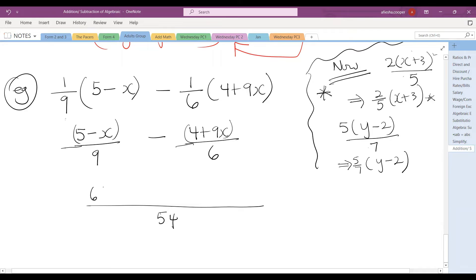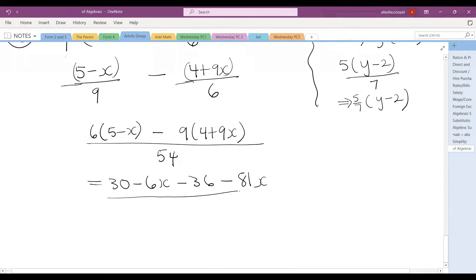9 into 54 is 6, so we do 6 by 5 minus x. Minus 6 into 54 is 9 by 4 plus 9x. We simplify, that will give us 30 minus 6x minus 36 minus 81x, all over 54. A lot of times, please don't forget to put back the numerator. Let's add up our like terms, 30 minus 36, that's negative 6. Negative 6x minus 81, that's minus 81x, all over 54.